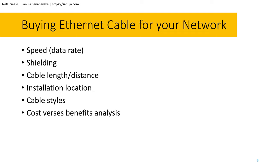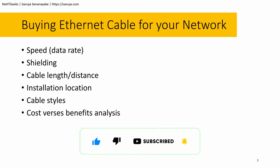Even if you have a cable supporting better data rates, the equipment can create a bottleneck. For example, if you have fiber optic cables everywhere but your main distribution switches are only 100 or 1,000 megabytes per second, it's not going to go any further than that. Buying a better speed-rated cable doesn't mean your network will inherently be faster.